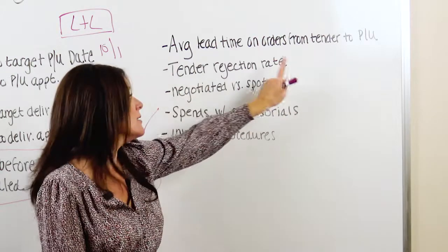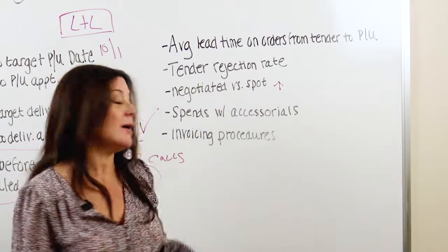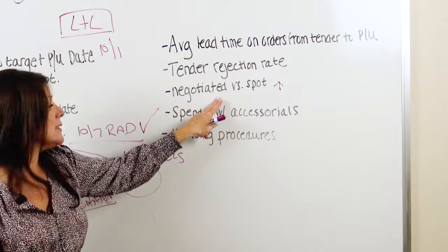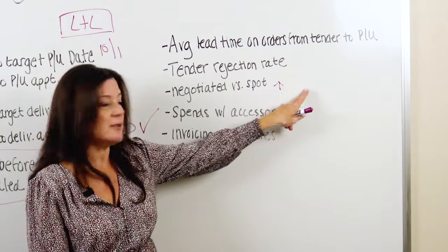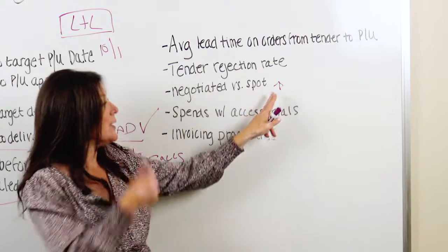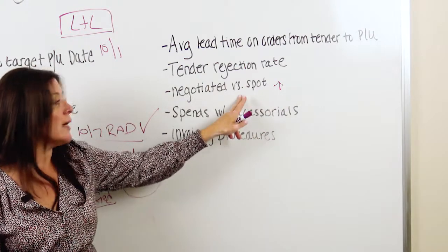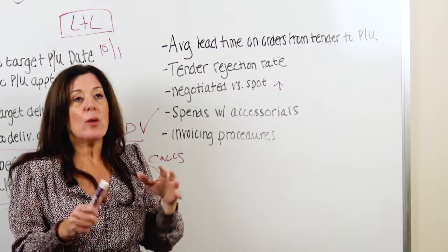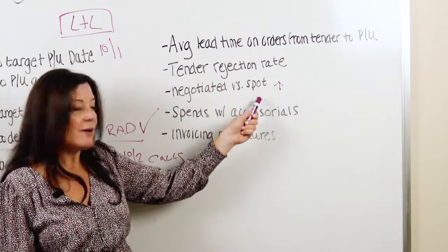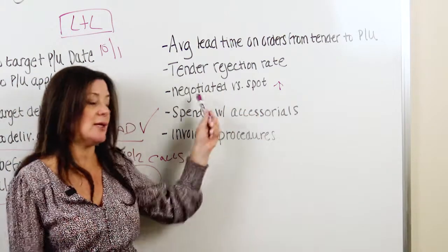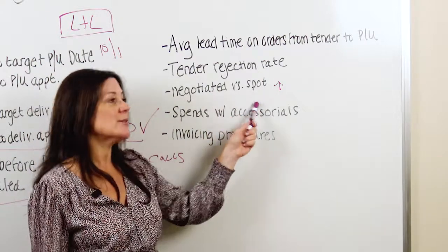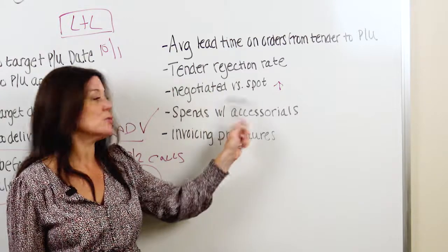If you've tendered a certain number of loads this week and your carrier has rejected this many, you want to be having those discussions. If you've got a primary carrier slated in a lane and you're seeing the rejection rate go up, you're going to want to start seeking alternatives. Negotiated versus spot is the same thing — super important especially in the truckload market. If you have a negotiated contract rate and the carrier is not meeting it and they're giving you a spot rate because of market conditions, you've got to measure that. You have to have the ability in your data to say yes, that's a negotiated rate, or no, it's a spot — otherwise you can't measure it. You want to control your own destiny.